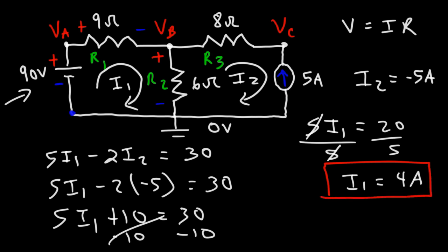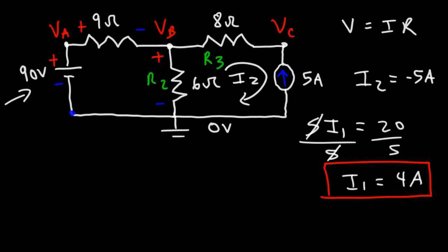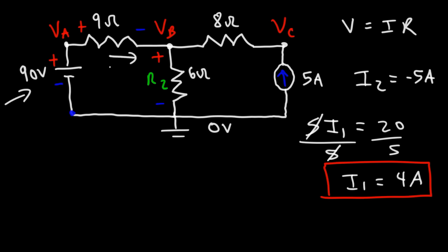Now that we have the current flowing in the first loop and the current flowing in the second loop, we have everything we need to solve this circuit. We have a current of 4 amps flowing through resistor 1, and a current of 5 amps flowing through resistor 3. So 4 and 5 add up to 9 amps of current flowing through resistor 2.